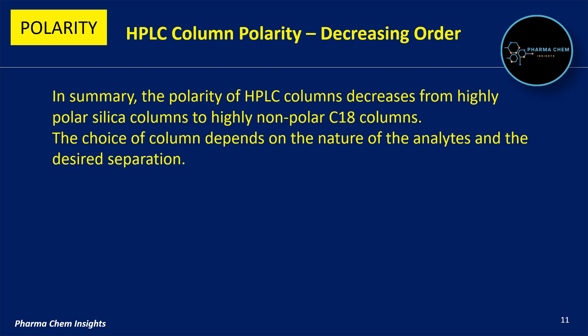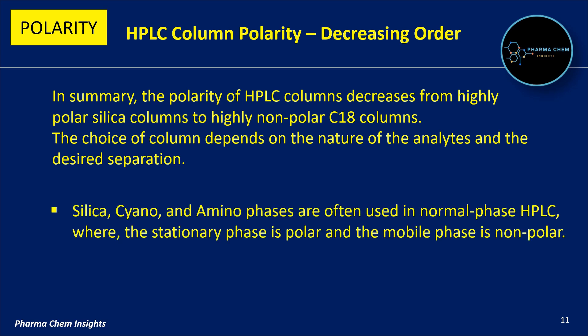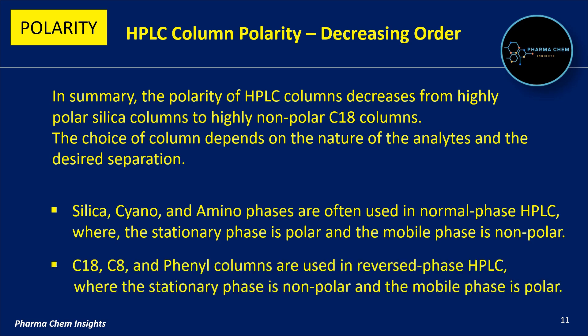Now let us summarize what we have learned. The polarity of HPLC columns decreases from highly polar silica columns to highly non-polar C18 columns. The choice of column depends on the nature of the analytes and the desired separation. Silica, cyano, and amino phases are often used in normal phase HPLC, where the stationary phase is polar and the mobile phase is non-polar. Whereas C18, C8, and phenyl columns are used in reverse phase HPLC, where the stationary phase is non-polar and the mobile phase is polar.